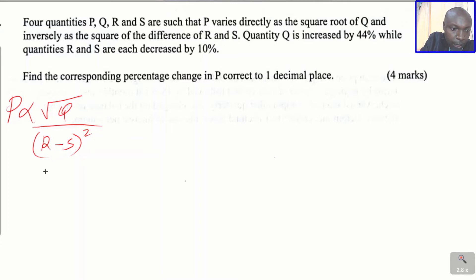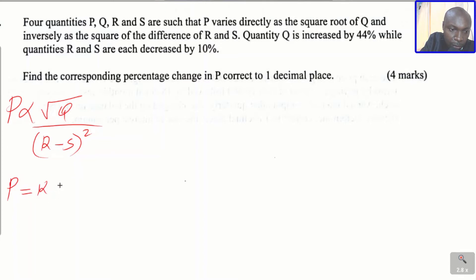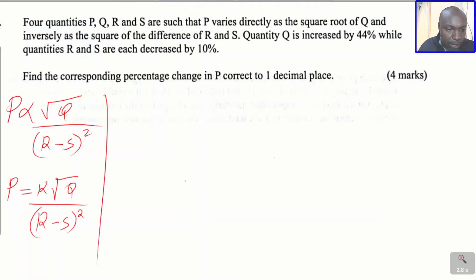That is how we're supposed to write it. The next step is to remove the sign of proportionality and replace it with an equal sign, and after doing that, we introduce a constant K. So P equals K times the square root of Q, divided by the square root of the difference of R and S. That is the equation connecting these four variables.